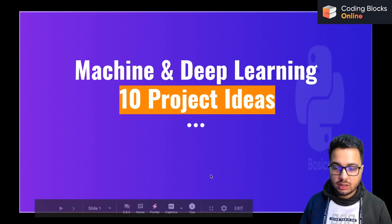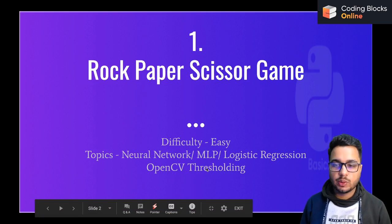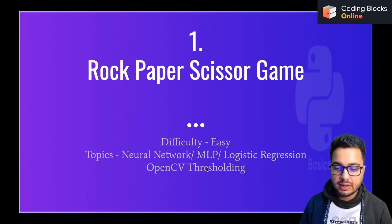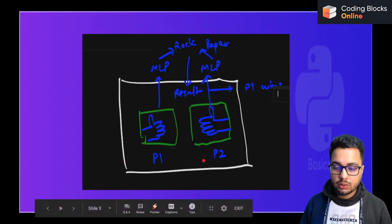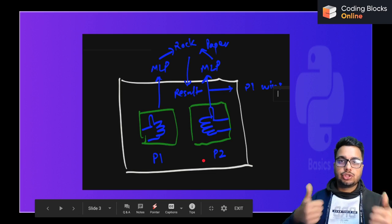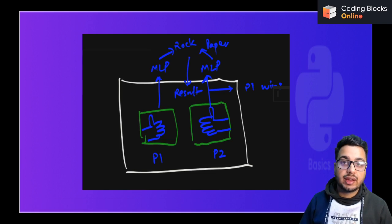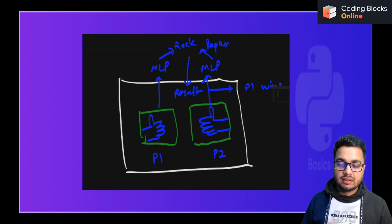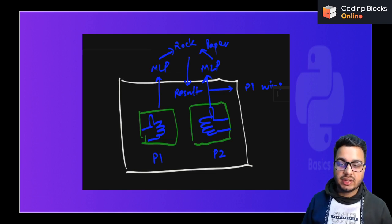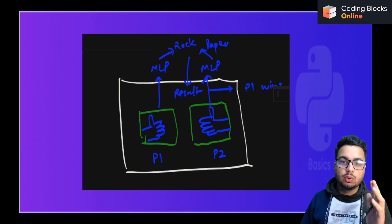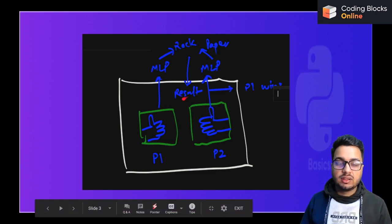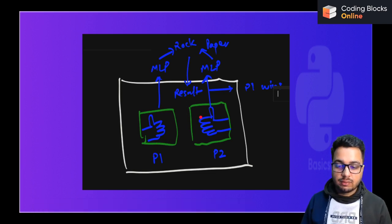The first project is going to be a rock paper scissors game and it's a relatively easy project. Two people will show their hands in front of the screen and each hand can be classified into one of three categories: rock, paper, or scissors. Based upon what you have seen for, let's say, 10 frames, you classify what type of hand it is and make a prediction. You will then show the result on the screen.